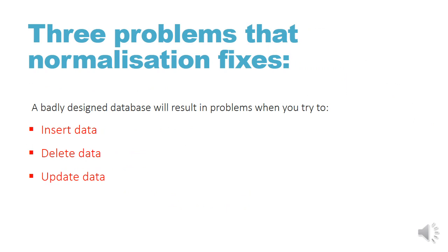The three problems that normalization fixes are the insert anomaly, delete anomaly, and update anomaly. A badly designed database will result in problems when you try to insert data, delete data, or update data. These are called anomalies, or problems.